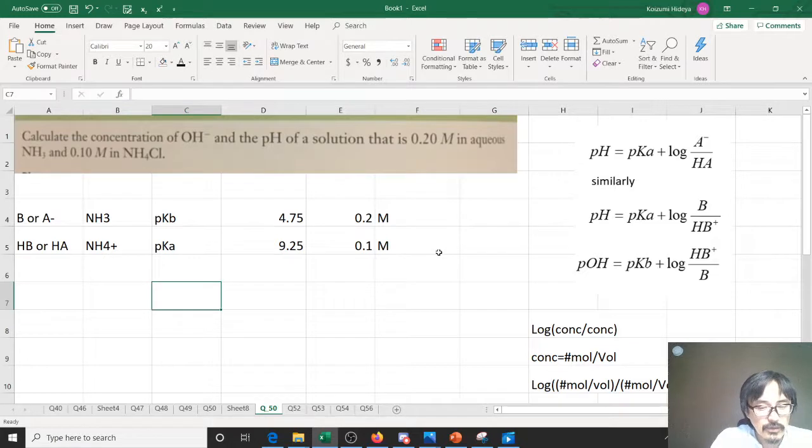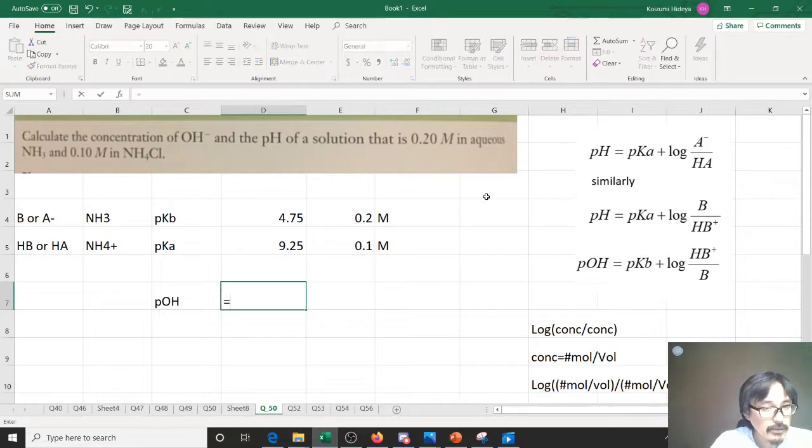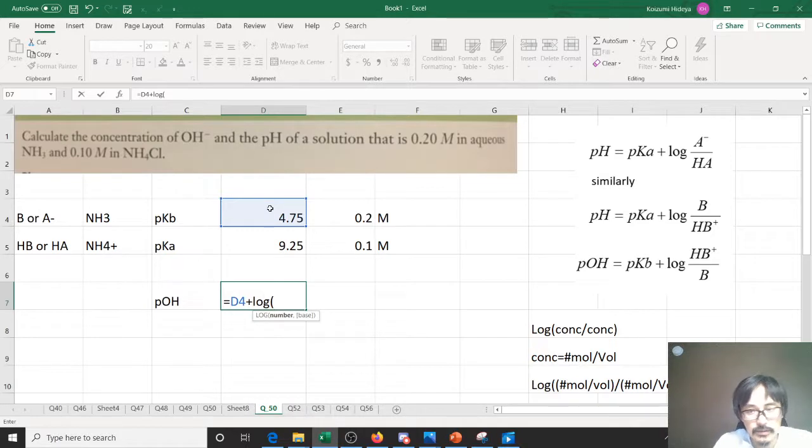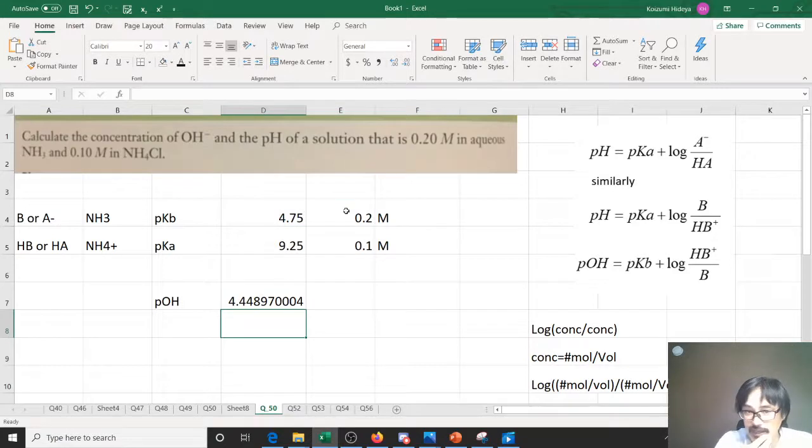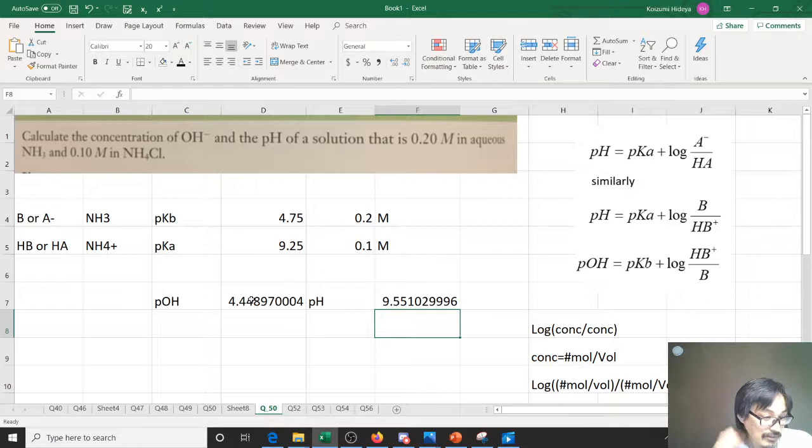Let's start calculating the pOH using the very last formula, which uses pKb. You can get that, and once you get that, pH equals 14 minus that.